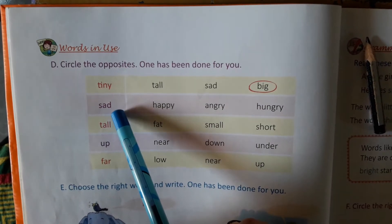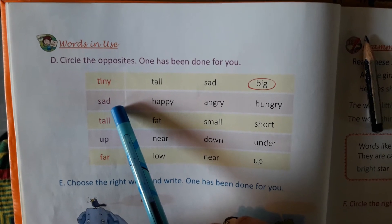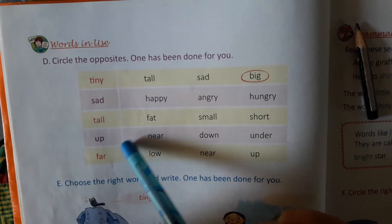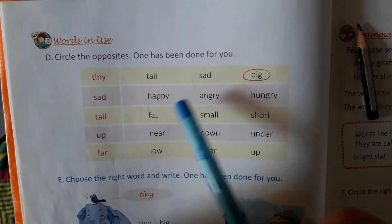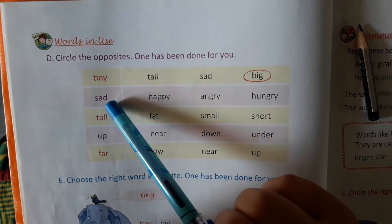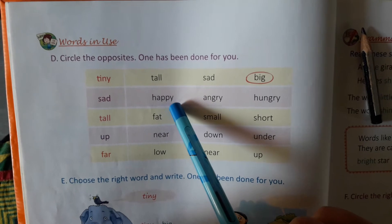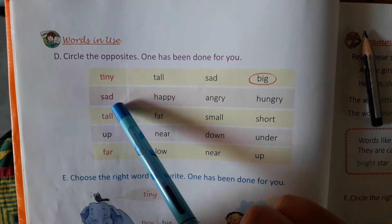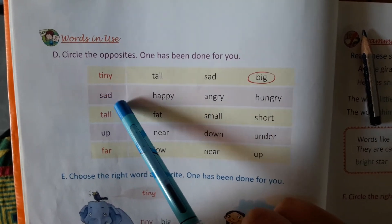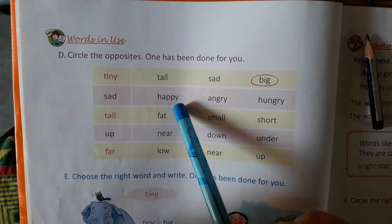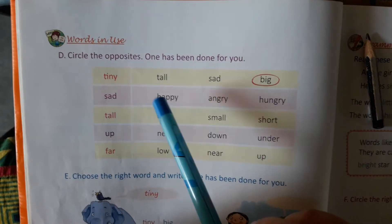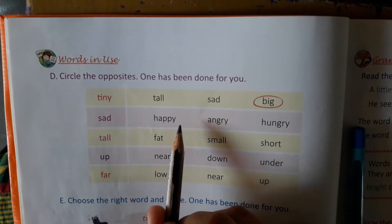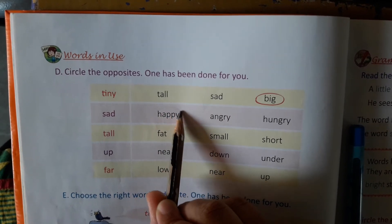Second one — sad. Sad का opposite क्या होगा बच्चो? Sad यानि की दुखी. दुखी का opposite है happy. Happy यानि की खुश. तो sad का opposite क्या हुआ? Happy. अपने pencil से आप इसे ऐसे circle करोगे, happy को आप ऐसे circle करोगे.